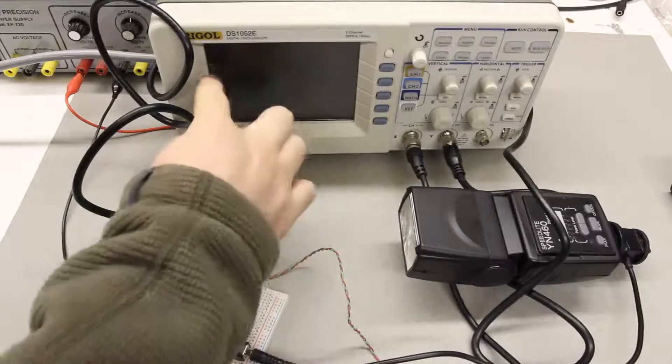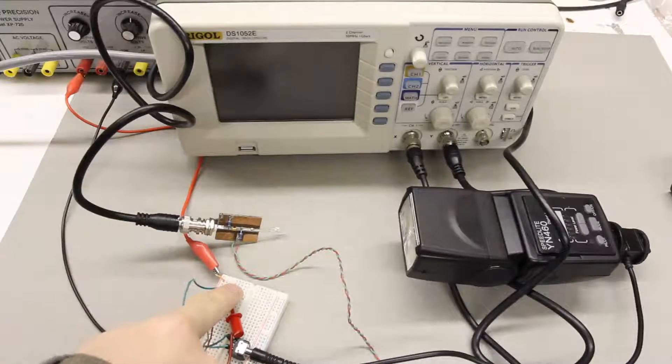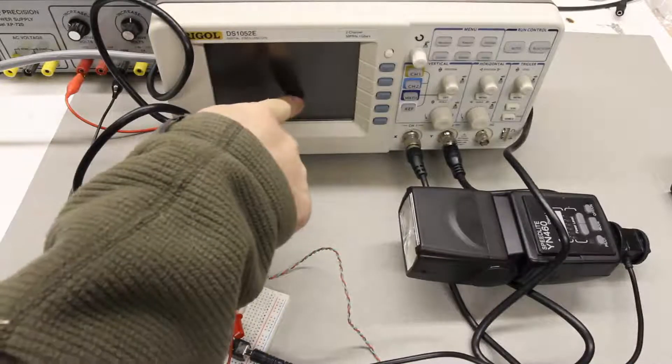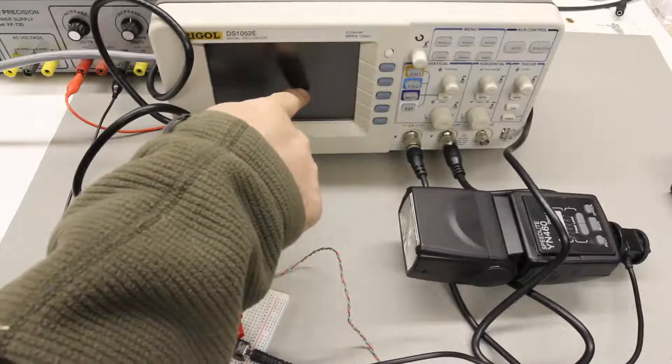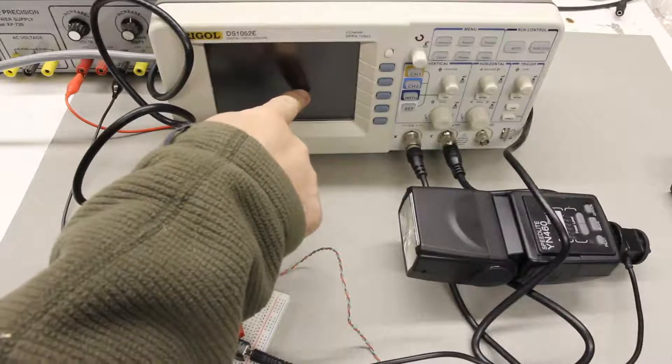That's going to stay at a high voltage until I push this button which will short the two pins of the flash together, dropping the voltage down to zero. That on the graph will indicate that we're triggering the flash.